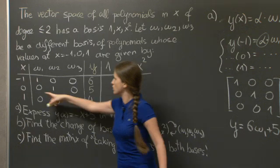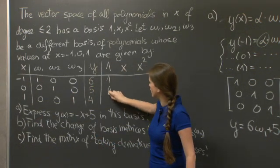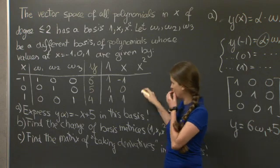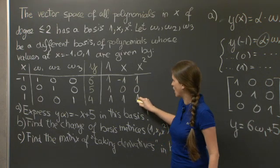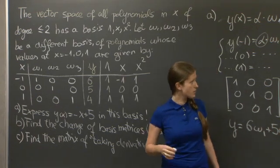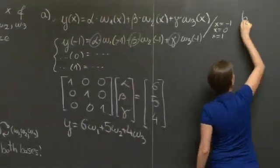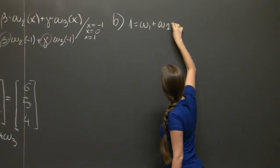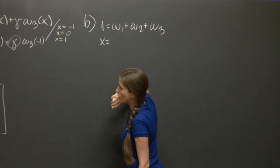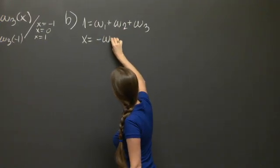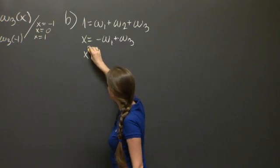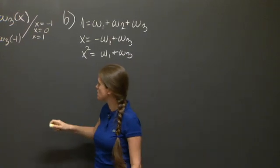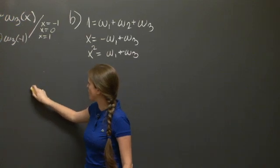So let's just find their values at these three points. 1 is a constant, it just takes value 1 everywhere. x takes value minus 1 at minus 1, 0 at 0, and 1 at 1. And x squared takes values 1, 0, and 1 at minus 1, 0, and 1. And from this, we can already conclude, let's go to part B here. We can conclude that 1 equals w1 plus w2 plus w3, that x equals minus w1 plus w3, and that x squared equals w1 plus w3.